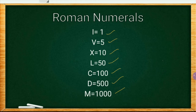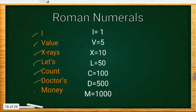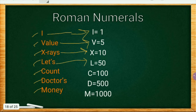Do you think this is difficult to remember? If so, I have a trick for you. Just try to remember this line: 'I Value X-rays, Let's Count Doctors Money.' Don't try to find any meaning behind this — it's just a memory trick. I is 1, Value is V which is 5, X-rays is X which is 10, and so on.